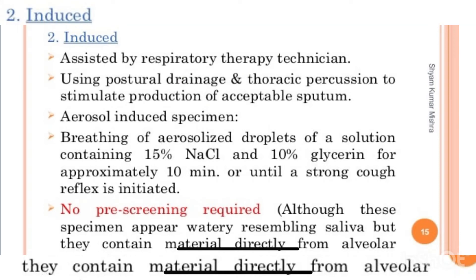Second is induced sputum. Assistance of respiratory therapy technicians is required for posterior drainage, thoracic percussion, and to stimulate production of acceptable sputum. Aerosol-induced specimens are also used, meaning the patient breathes aerosolized droplets of a solution containing 15% NaCl and 10% glycerine for approximately 10 ml or until a strong cough is induced. No pre-screening is required, although these samples appear very watery resembling saliva, but they contain material directly from the alveolar region.